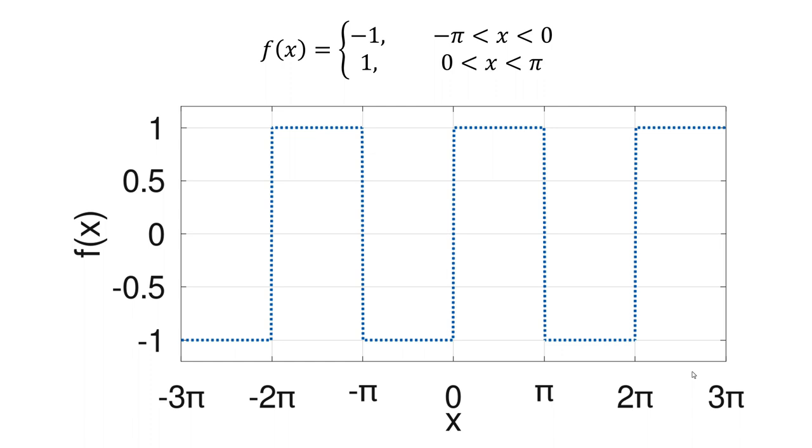We will work with a periodic square wave function fx as shown in figure. The value of fx at minus pi to 0 is minus 1, while fx is 1 between 0 and pi.